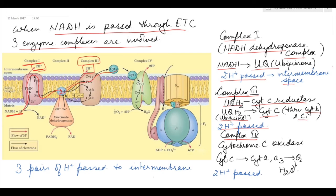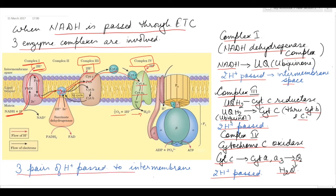Complex 4, also referred to as cytochrome C oxidase complex, catalyzes the transfer of electrons from cytochrome C to cytochrome aa3, and finally to oxygen to form water, pushing two protons into the intermembrane space. In the diagram, this is Complex 4 — it catalyzes the transfer from cytochrome C to aa3 and finally to oxygen. So when NADH is passed through the electron transport chain, three pairs of protons are pushed into the intermembrane space.